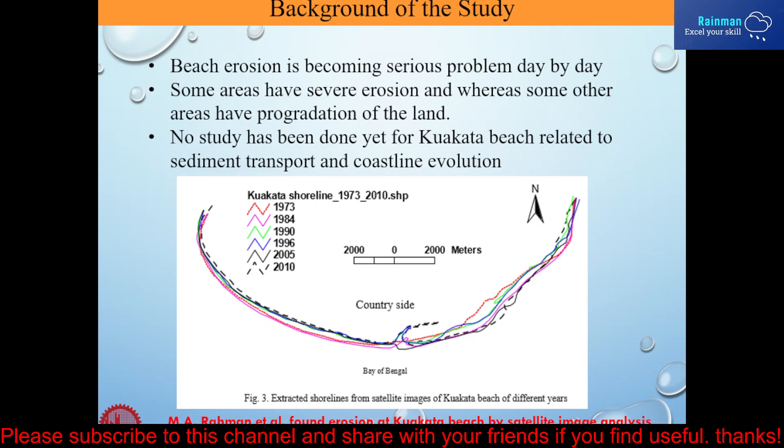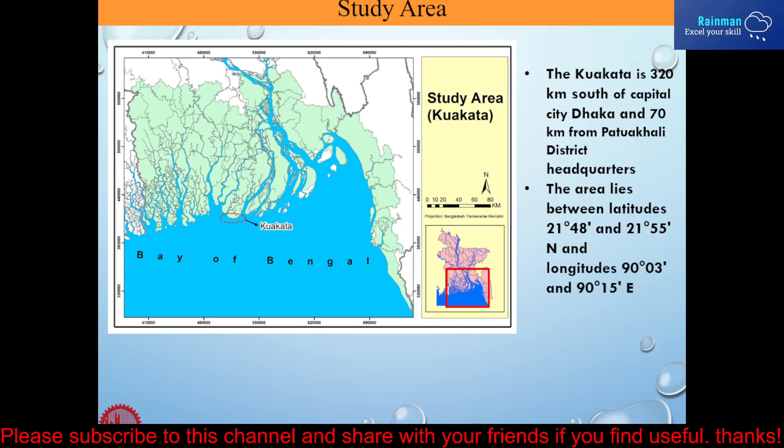This type of study has not been done yet for Kuakata Beach. Kuakata Beach is a very beautiful panoramic sea beach, also known as Shagur Khanna. There are 139 polders all over Bangladesh, especially in the coastal belt. Kuakata Beach is the setback portion of polder 48, located under Kalapara Upazila of Patuakhali District, which is 320 km away from the capital Dhaka. It is necessary to protect the beach from erosion and extensive study is required to take protection measures.